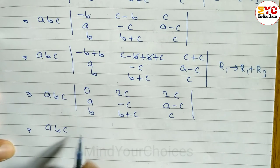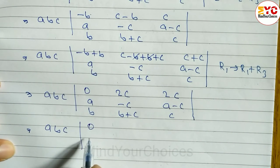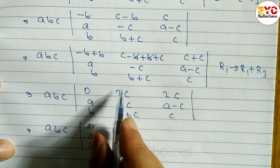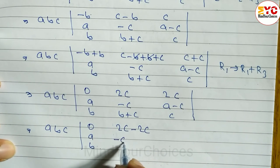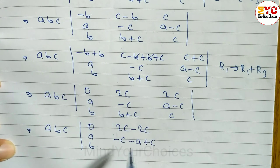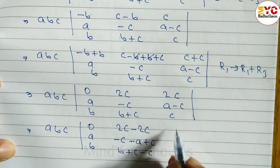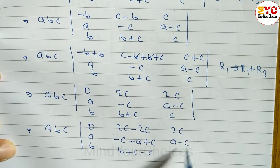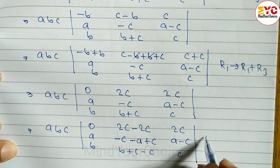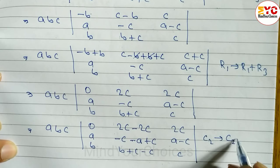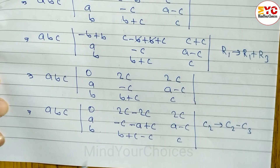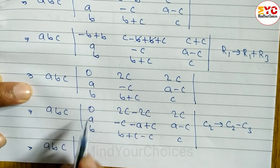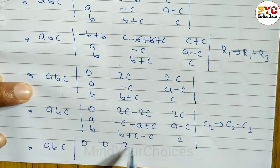So we apply C2 → C2 − C3 to create a second zero. In row 1: 2c minus 2c = 0. In row 2: (b−c) minus (b+c) = −2c, and in row 3: (a−c) minus c = a−2c. The third column stays the same: 2c, b+c, and c. This gives us two zeros in row 1, which we need for cofactor expansion.